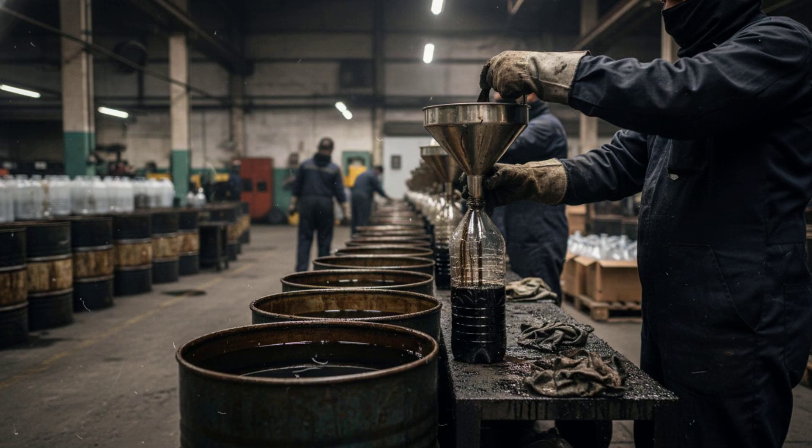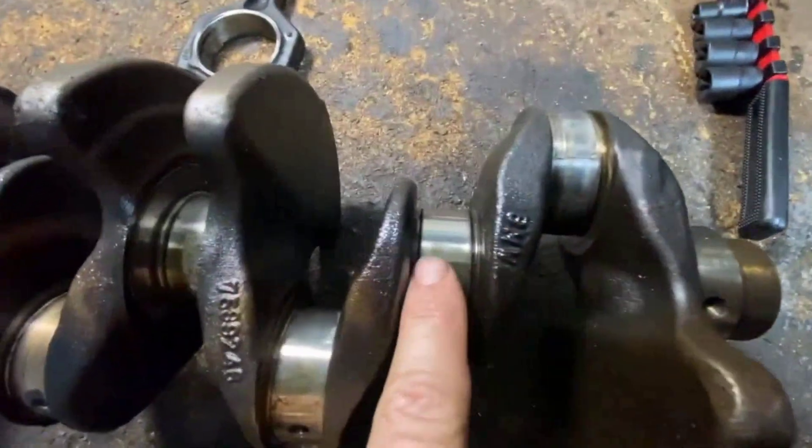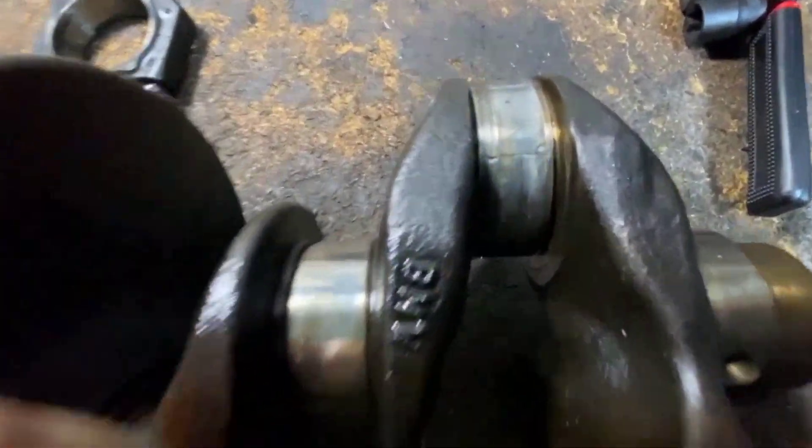Lab spectrometry flagged silicon above 40 parts per million as a warning sign, but in counterfeit or recycled oils, levels can spike much higher, grinding away at bearings, rings, and cylinder walls with every revolution.